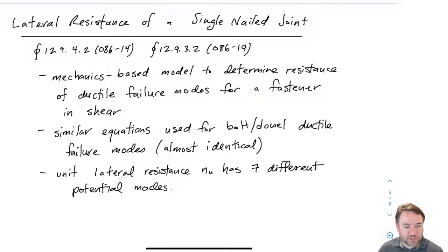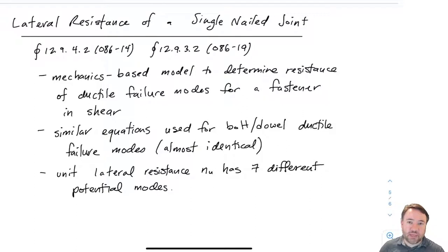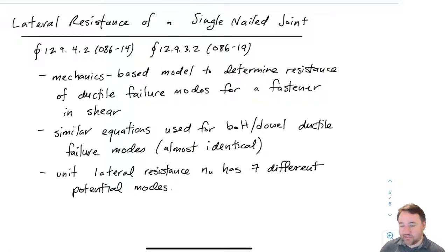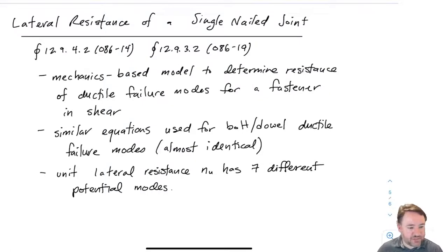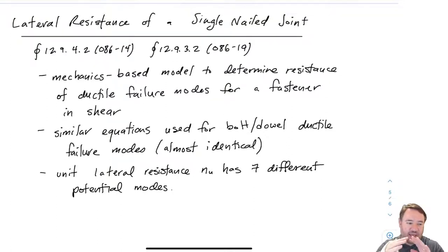In the previous video we looked at the geometry aspects of nailed connections — what they look like, what embedment lengths and wood sizes are required, and how to check adequate spacing of the nails. In this video we're going to figure out exactly how to calculate the strength of these connections. That strength is built up on the basis of individual nails, so we find the strength of individual nails and then add them all together to get the full strength of a total connection.